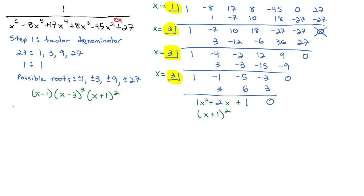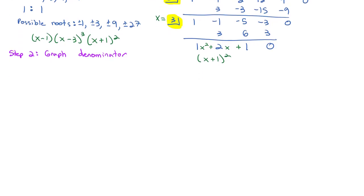Step 2 then is we can graph the denominator. I'm going to scroll down just so that I can see that better. I can see that the x-intercepts from that denominator are x equals 1, x equals 3 is a triple root, I'm going to put a little note that it's a triple root, and x equals negative 1 is a double root, because it's squared.